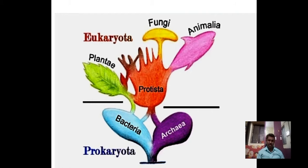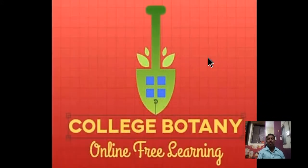Kingdom Monera — bacteria and archaea — are prokaryotes, while Kingdom Plantae, Fungi, and Animalia show eukaryotic cell structure. In this lecture we are going to learn the characteristic features of the prokaryotic cell. In the next video we will learn the characteristic features of the eukaryotic cell. You are all welcome to the channel College Botany Online Free.